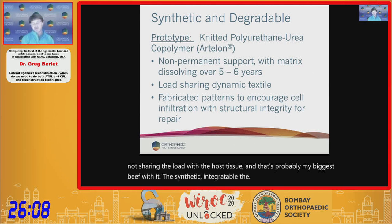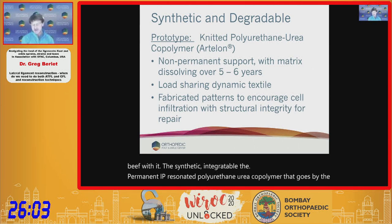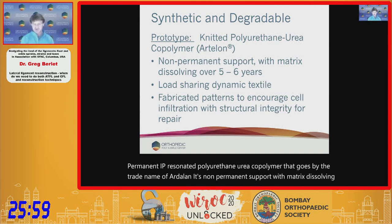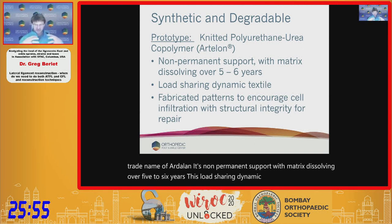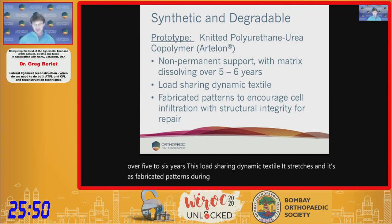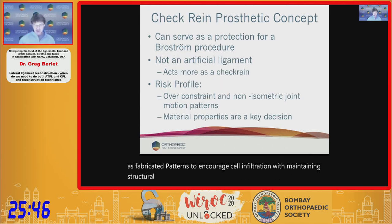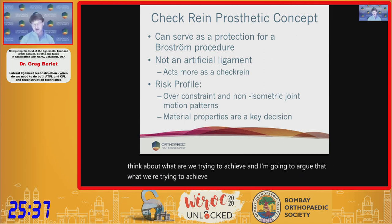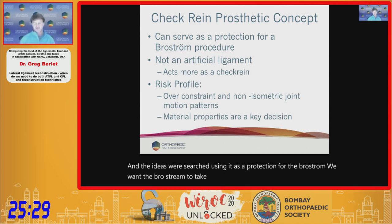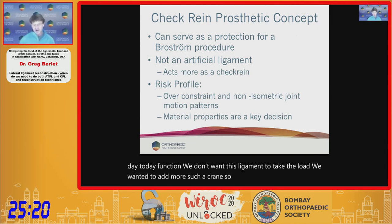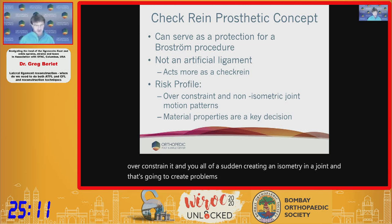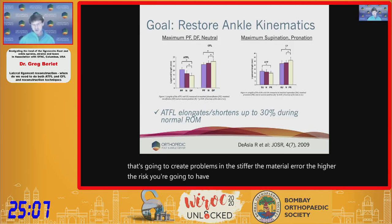The synthetic degradable prototype is a knitted polyurethane-urea co-polymer — trade name Artalon — providing non-permanent support with the matrix dissolving over five to six years. It is a load-sharing, dynamic textile that stretches and has fabricated patterns to encourage cell infiltration while maintaining structural integrity. The goal is a check-rein concept: we want the Brostrum to bear day-to-day load and the augment to act only as a check-rein. Over-constraint through non-isometry creates problems; stiffer materials carry higher risk.